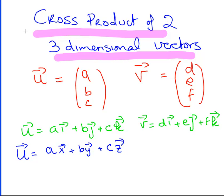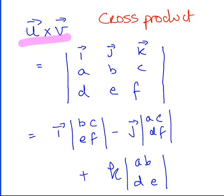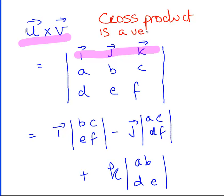What we're going to do here is come up with the cross product of two three-dimensional vectors. This method is really for a pair of three-dimensional vectors — for four dimensions or higher it doesn't work as well and essentially makes no sense to try it this way. Also, the outcome of this operation is itself a vector. Just to counterpoint that with the dot product: the dot product necessarily gives a scalar number, whereas the cross product gives a vector.